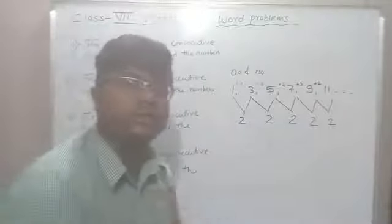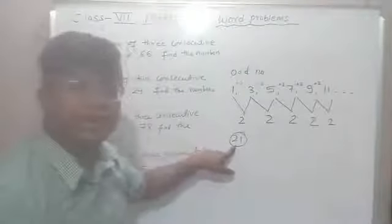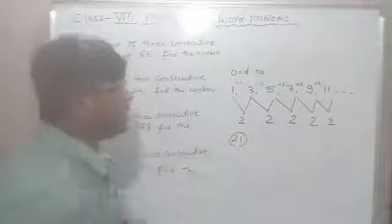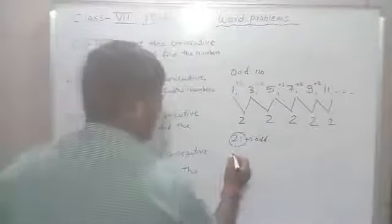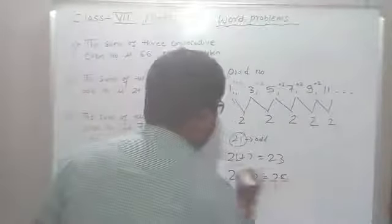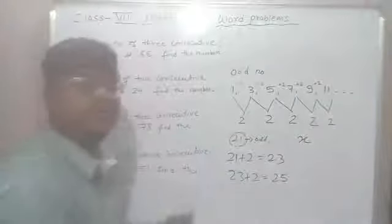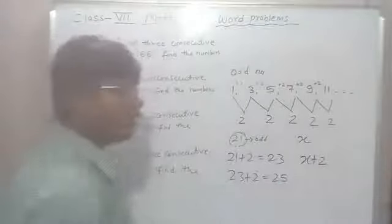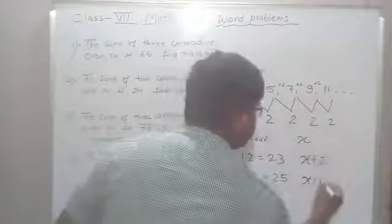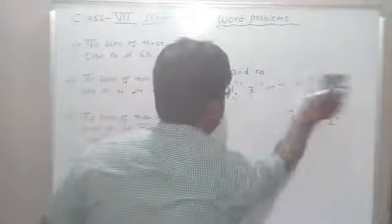For any odd number, adding 2 gives the next consecutive odd number: 21 + 2 = 23, 23 + 2 = 25. So if the first odd number is x, the second consecutive odd number is x + 2, and the third would be x + 4 — the supposition is the same as for even numbers.